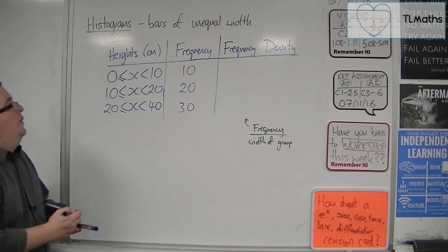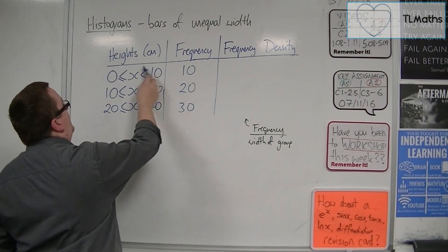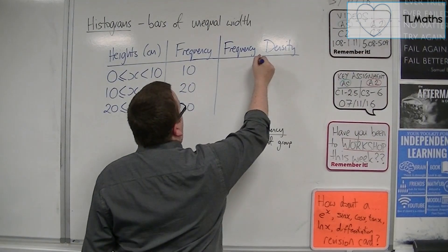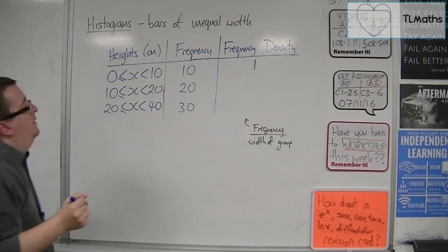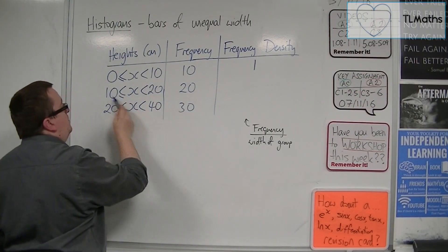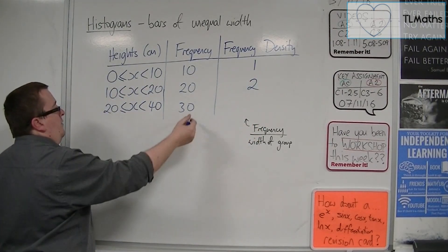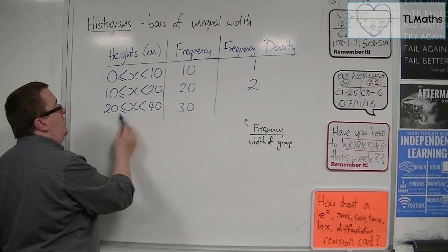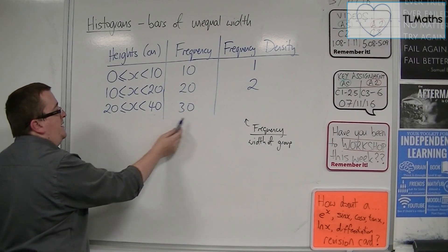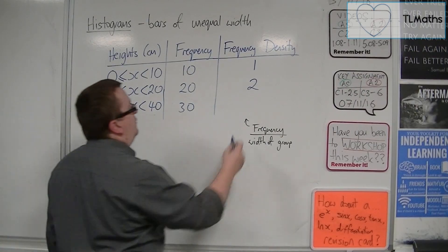So we take the frequency, which in this case is 10, and divide it by the width of the group, which is 10. So 10 divided by 10 is 1. This one is 20 divided by 10, and so that's 2. This one is 30 divided by 20. The width of the group is 20. So 30 divided by 20 is 1.5.